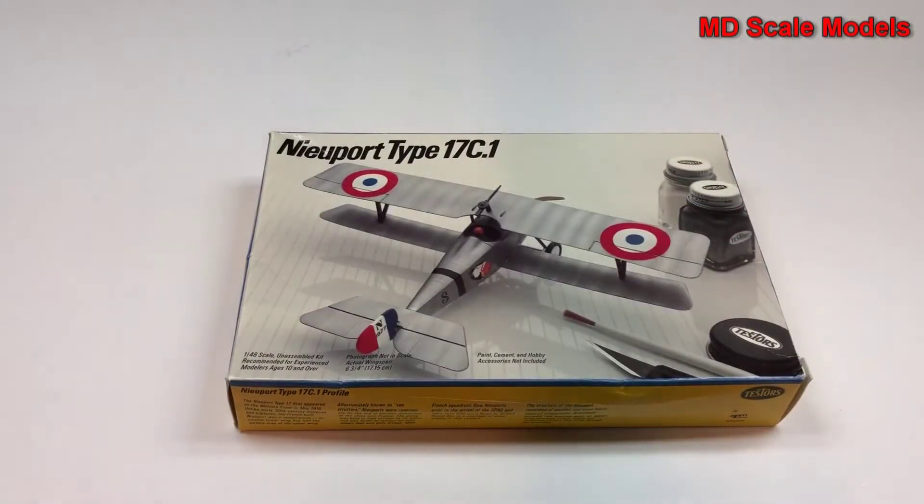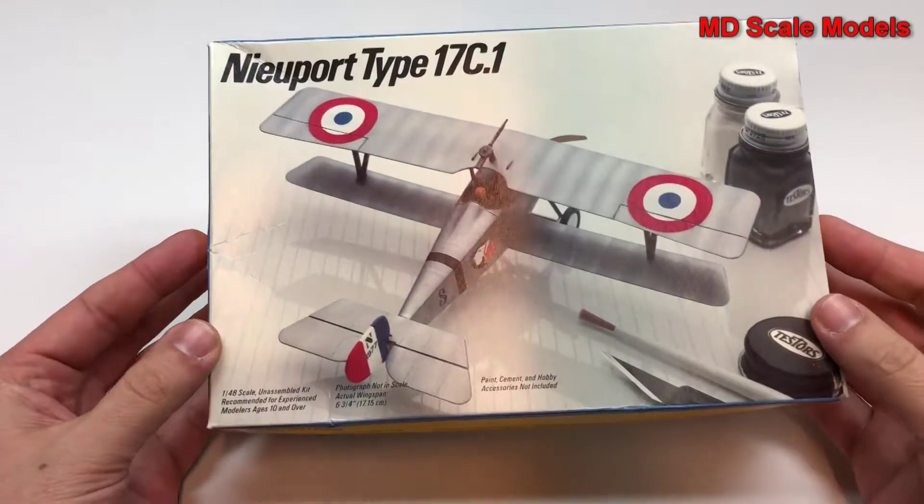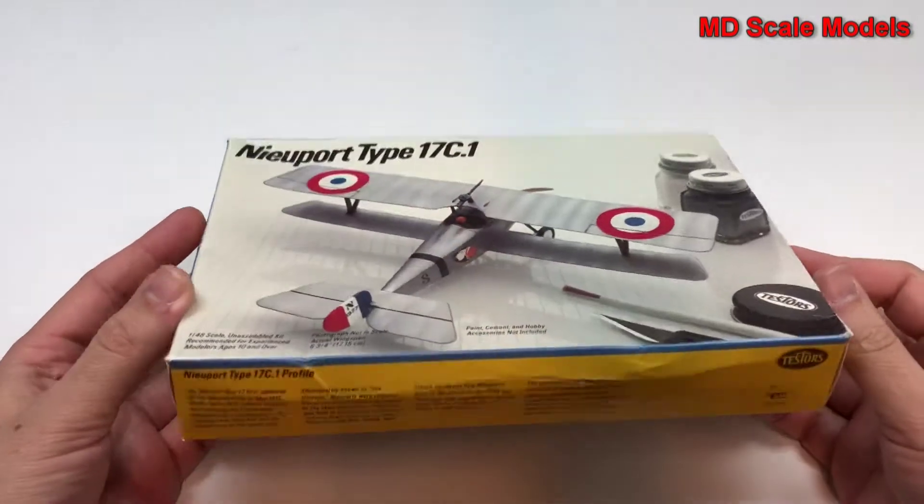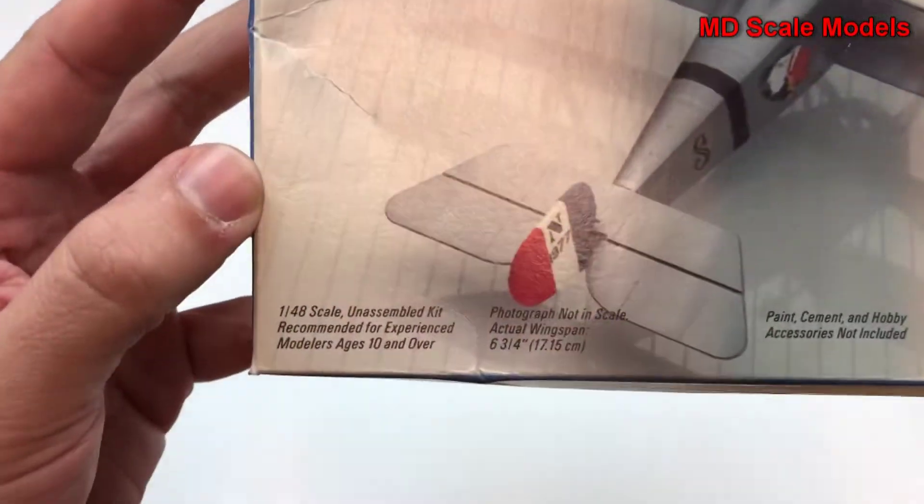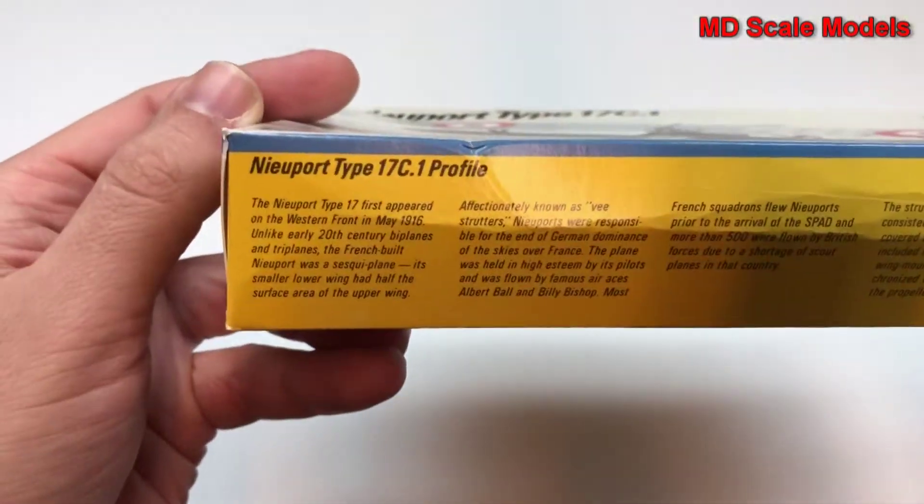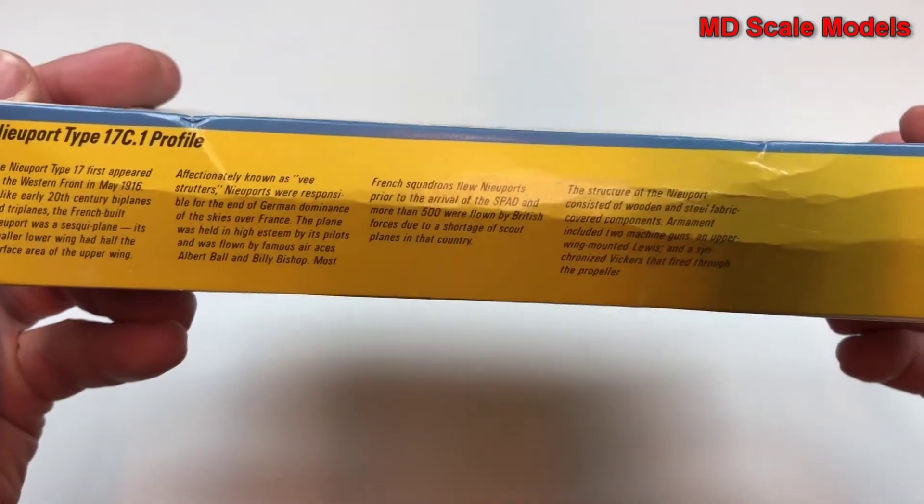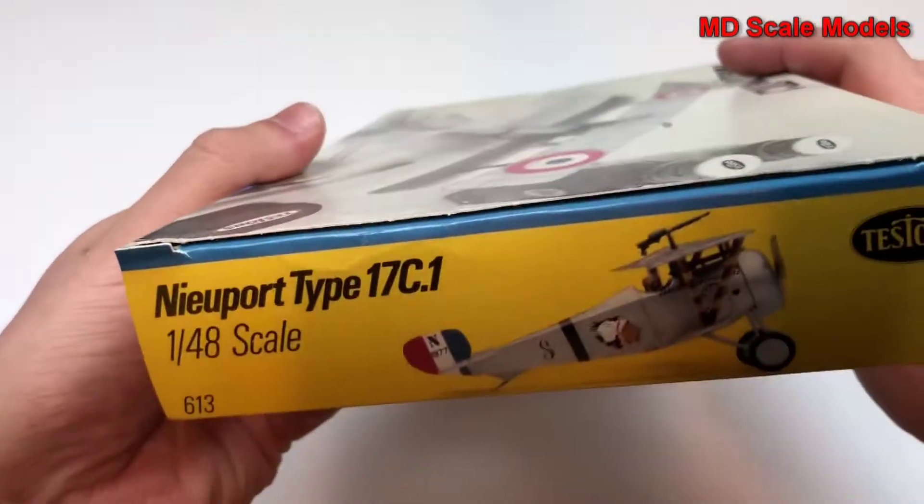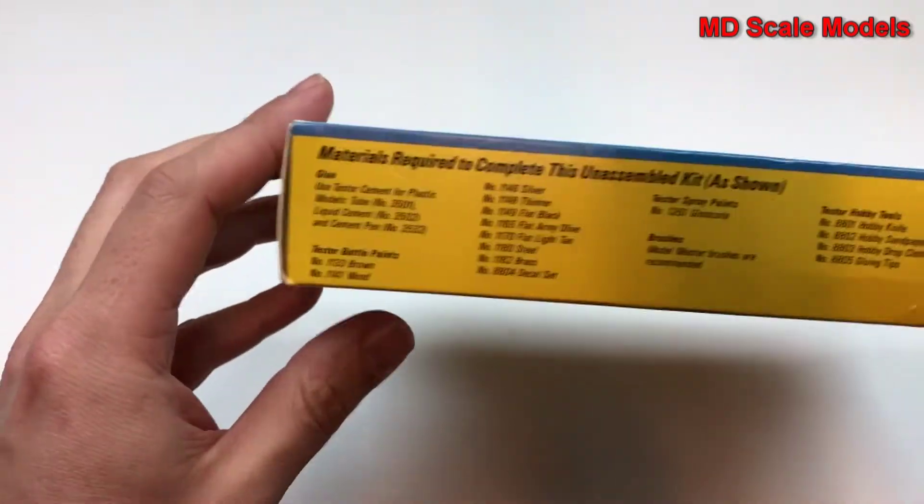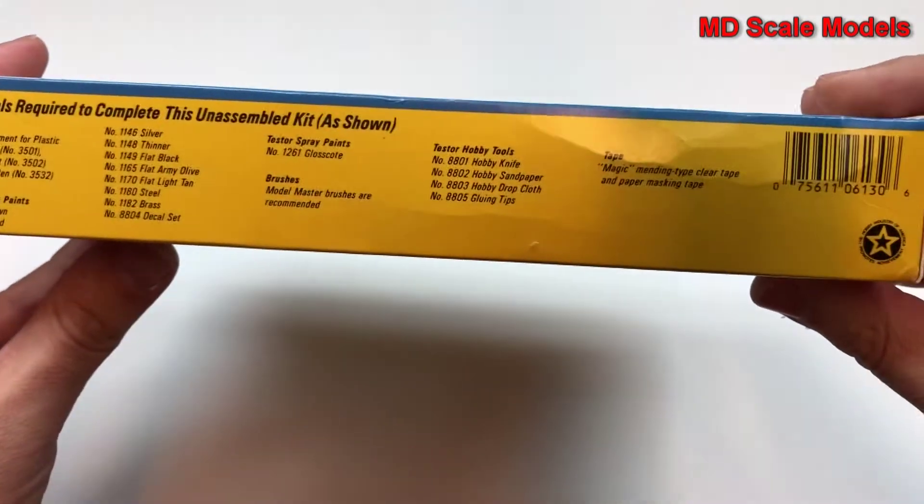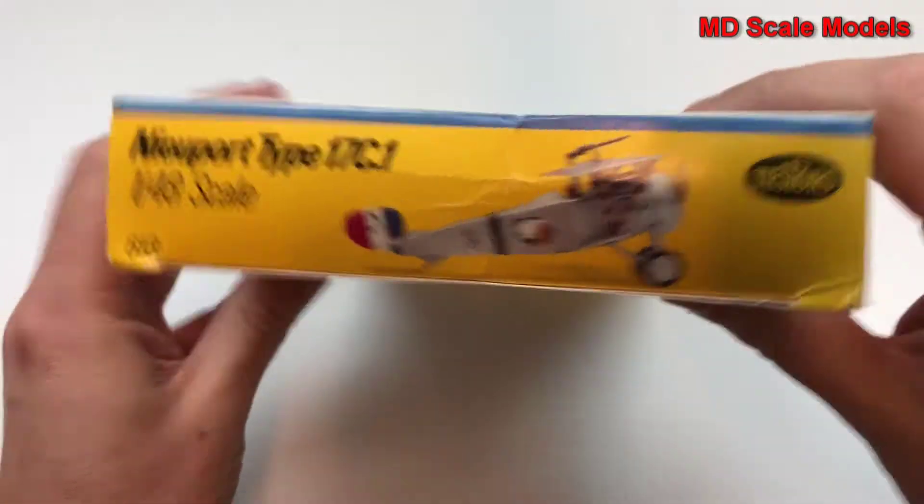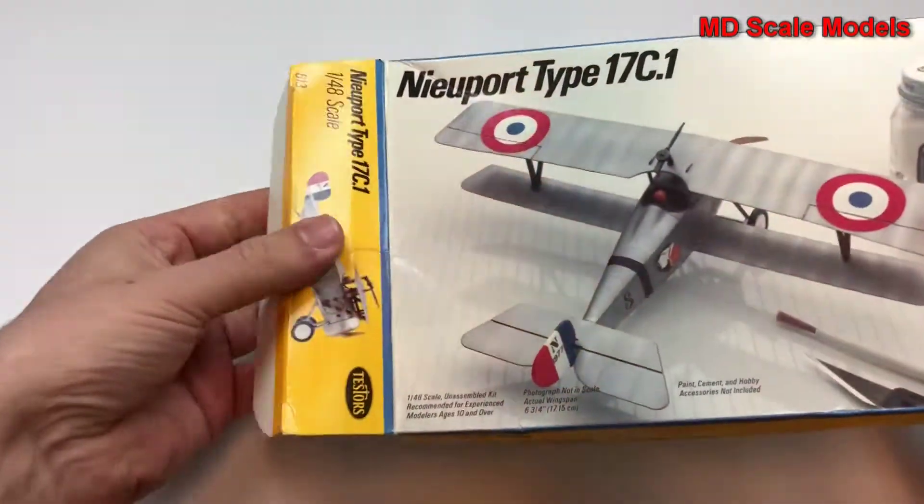This model kit review is of the Newport Type 17C, a 1:48 scale model by Testers. Here are some of the dimensions and details about the plane, and another picture of the finished model and the colors needed. Let's have a look inside.